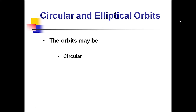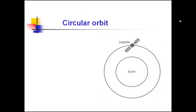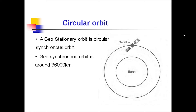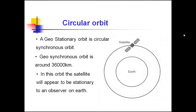There are circular and elliptical orbits. A geostationary orbit is a circular synchronous orbit. The satellite revolves around the Earth in a circular path. Geosynchronous orbit is around 36,000 km. In this orbit, the satellite will appear to be stationary to an observer on Earth. Hence, geosynchronous satellites are geostationary.